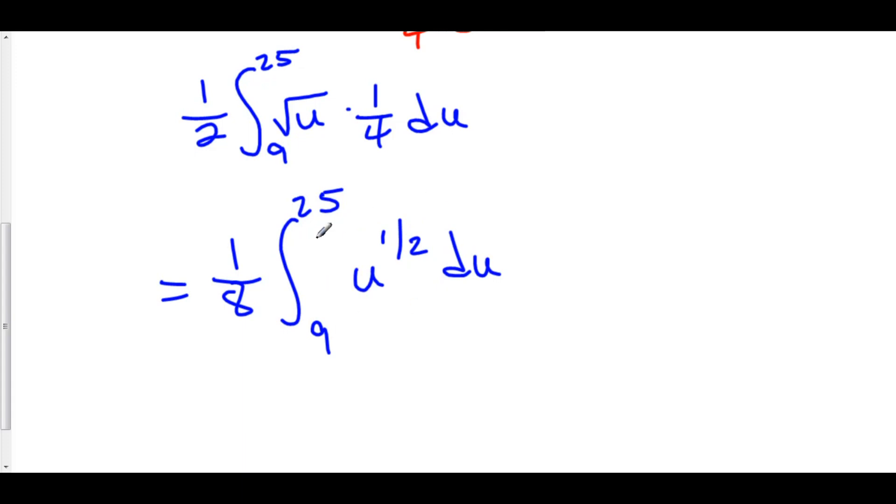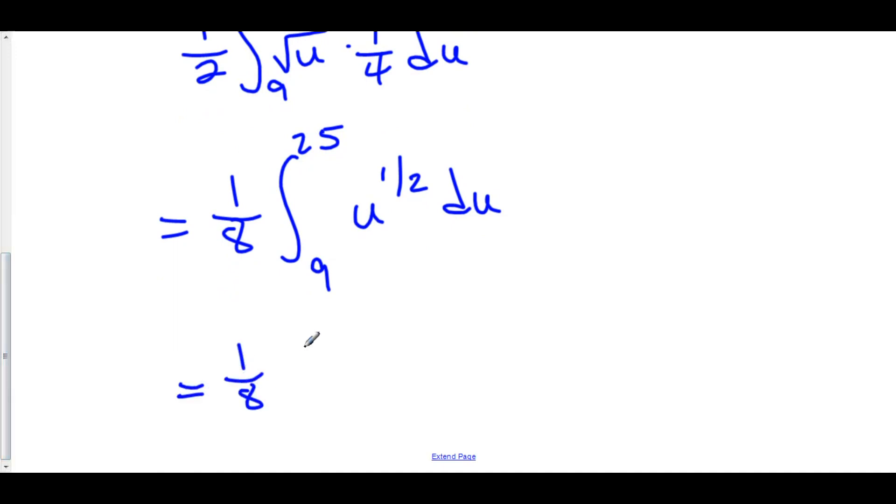And the reason why I'm doing that is because it's easier to use anti-power rule than to try to figure out what the square root would be in terms of an anti-derivative. This is equal to 1 over 8 times the anti-derivative of u to the 1 half. Using our anti-power rule formula, you add 1 to the exponent. That gives us 3 over 2. And then you divide by that. So, we have u to the 3 over 2 divided by 3 over 2. Which is really the same thing as multiplying by 2 over 3. So, this is 2 over 3 times u to the 3 over 2 plus c. Of course, we don't need a plus c because we have 9 and we have 25 in our limits of integration.